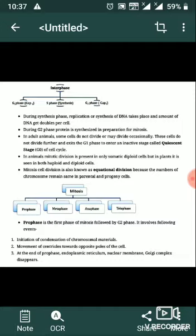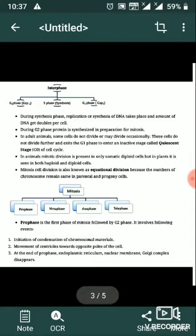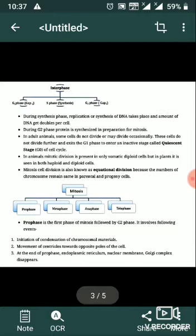In animals, mitotic divisions are present only in somatic diploid cells, but in plants it is seen in both haploid and diploid cells. Mitosis is known as equational division because the number of chromosomes remains the same in parental and progeny cells.